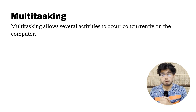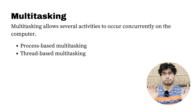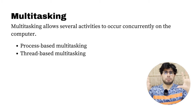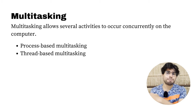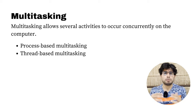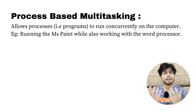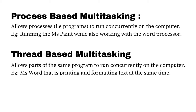For process-based multitasking, let's say you're typing a document in MS Word and at the same time painting something in MS Paint, switching between these two programs. You might be watching a movie on VLC Media Player and simultaneously browsing on Google Chrome. Running multiple programs in parallel is process-based multitasking. Now for thread-based multitasking — here we are running two threads in parallel within the same program.